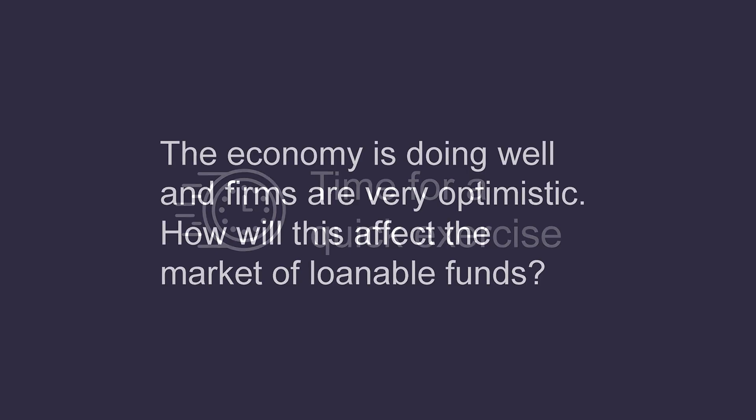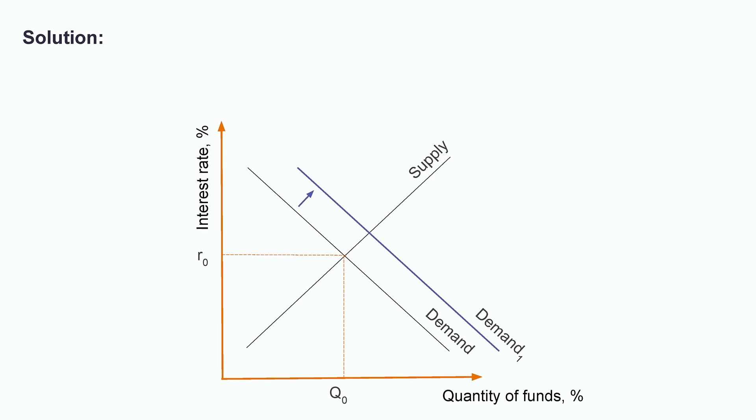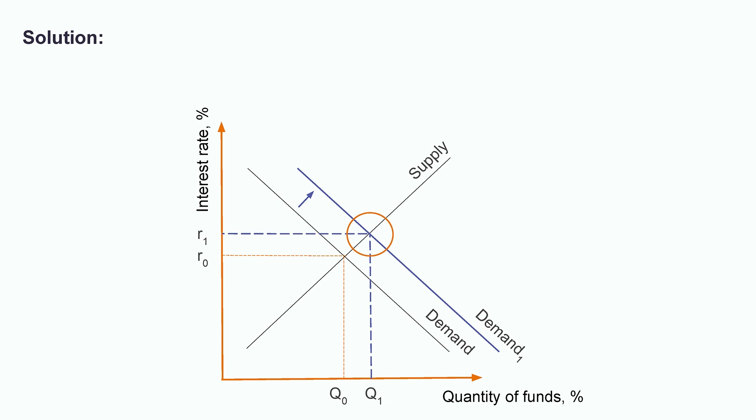Time for a quick exercise. The economy is doing well and firms are very optimistic — they believe that the profits of their future investment projects will increase. How will that affect the market for loanable funds? Use the graph below to describe what happens to the equilibrium rate and equilibrium quantity. Firms are now more optimistic about their investment projects, so they want to make more investments and, as a result, need more borrowing. The demand for funds increases, so the demand curve moves outward to Demand 1. Now there will be more funds loaned at a higher rate — R1 and Q1 are the new equilibrium rate and quantity.